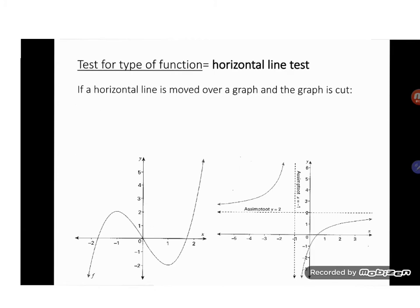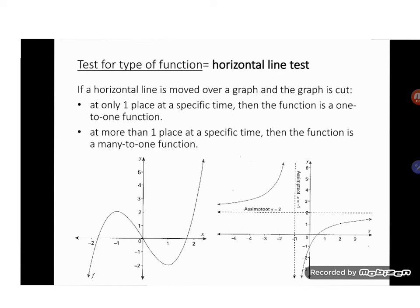And once again, there is a test for the type of function, and that is the horizontal line test. If a horizontal line is moved over the graph and the graph is cut at only one place at a specific time, then that function is a one-to-one function. If that horizontal line cuts the graph at more than one place at a specific time, then the function is a many-to-one function.